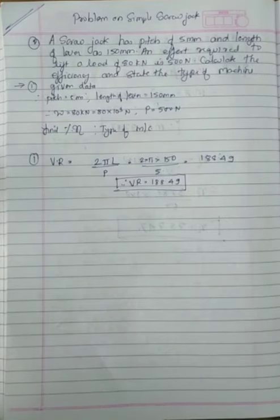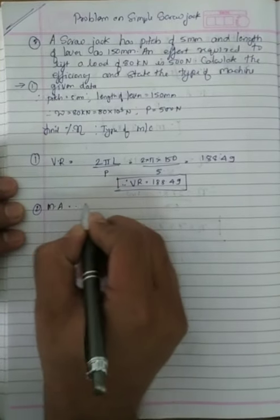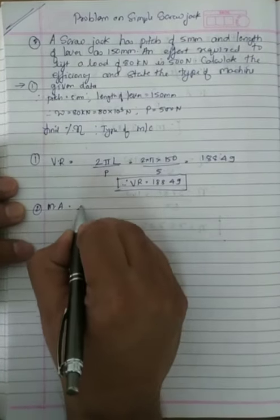Next, an effort required to lift a load of 80 kN is 500 N. So next mechanical advantage. Mechanical advantage formula is load upon effort.